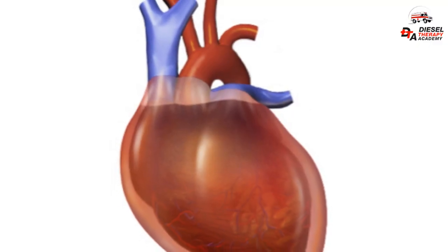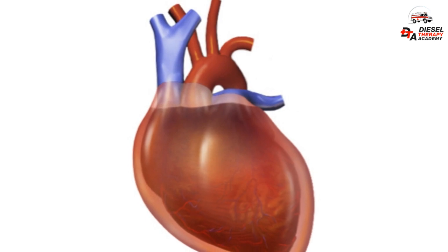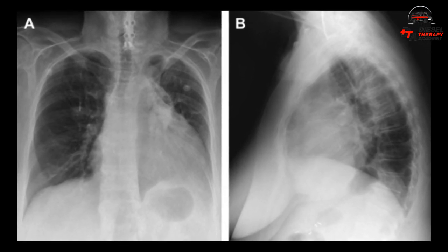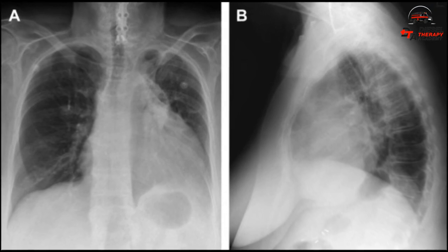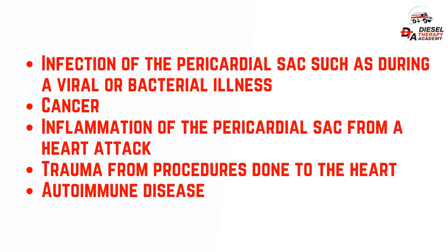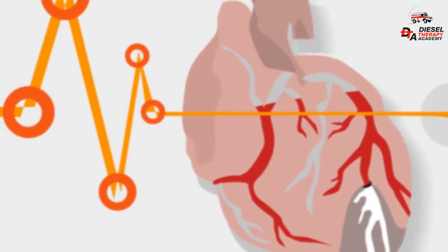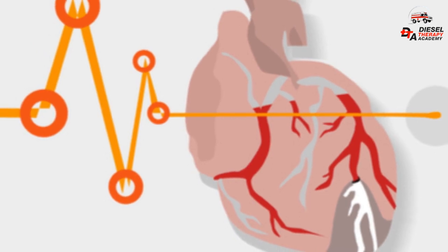Cardiac tamponade results from fluid buildup in the sac surrounding the heart. This fluid buildup is called a pericardial effusion. Often the pericardial sac also becomes inflamed. Some health issues that can cause this fluid buildup are: infection of the pericardial sac such as during a viral or bacterial illness; cancer; inflammation of the pericardial sac from a heart attack; trauma from procedures done to the heart; autoimmune disease; reactions to certain medicines; radiation treatment to the chest area; metabolic causes such as chronic kidney failure with a buildup of fluid and toxins in the body; and after open heart surgery. Sometimes acute cardiac tamponade can also lead to very low blood pressure that can cause symptoms of shock.